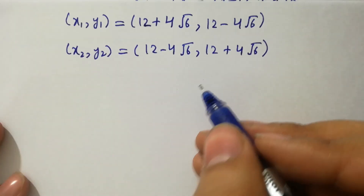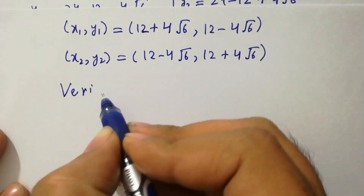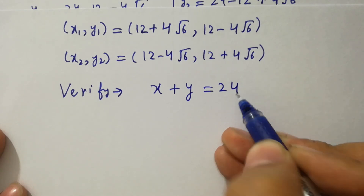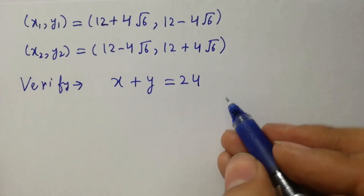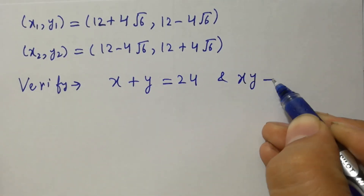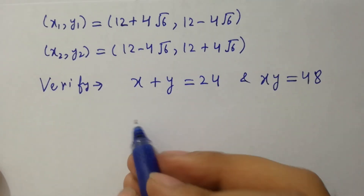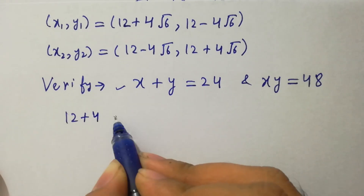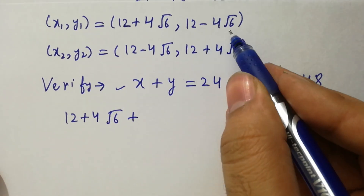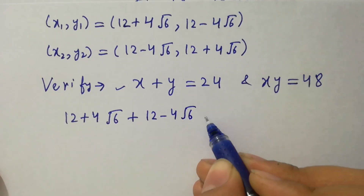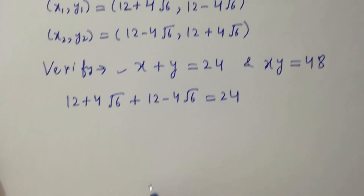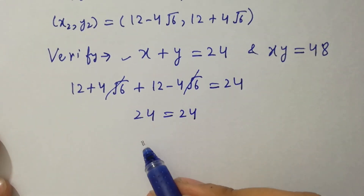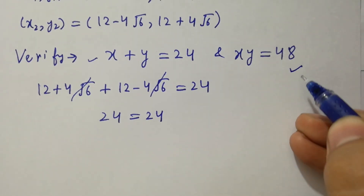Now verify x plus y equals 24. Taking x₁ and y₁: (12 plus 4 square root of 6) plus (12 minus 4 square root of 6) equals 24. The 4 square root of 6 terms cancel, and 12 plus 12 gives 24 equals 24. Left hand side equals right hand side.